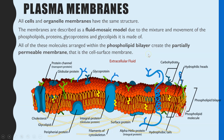This is what creates what's known as the partially permeable membrane. The different properties of the phospholipids determine which molecules can simply diffuse through the membrane.